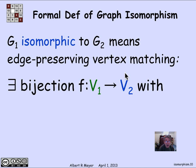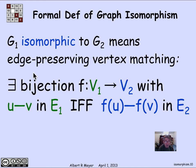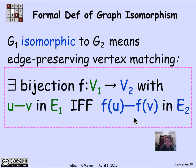Stating it formally: an isomorphism between two graphs g1 and g2 is a bijection between vertices v1 of g1 and v2 of g2, with the property that there's an edge uv in g1 if and only if f(u)f(v) is an edge in g2. That if-and-only-if is what edge-preserving means. This is essentially the same as the digraph case, except digraphs have directed edges — there's an edge from u to v if and only if there's an edge from f(u) to f(v). Without direction, the definition is slightly simpler.